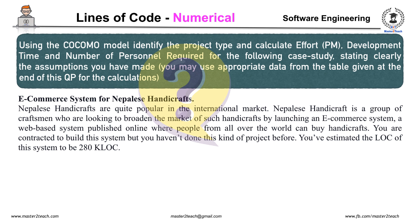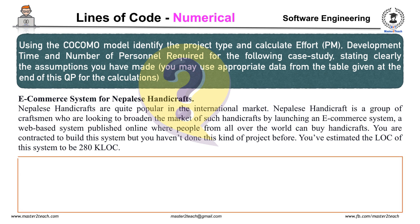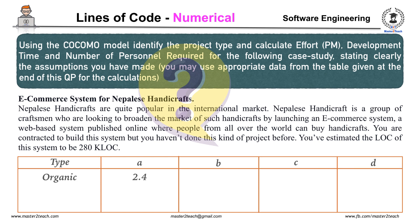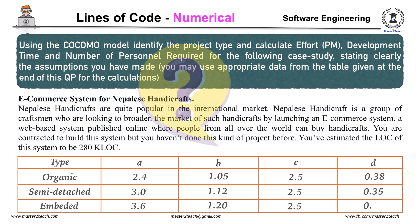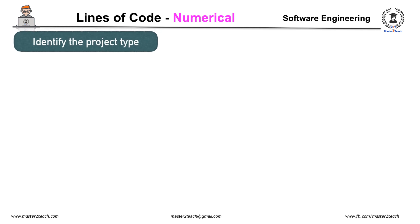The constant values a, b, c, and d are given in the table. The objective is to identify the project type — that is, the mode of development: organic, semi-detached, or embedded — and after identification, calculate the effort, development time, and number of personnel required using the appropriate mode of development. Let's learn how to identify the project type.